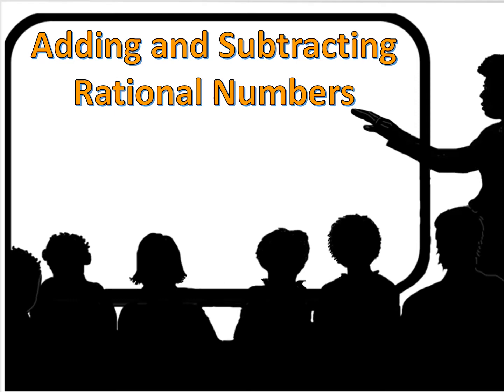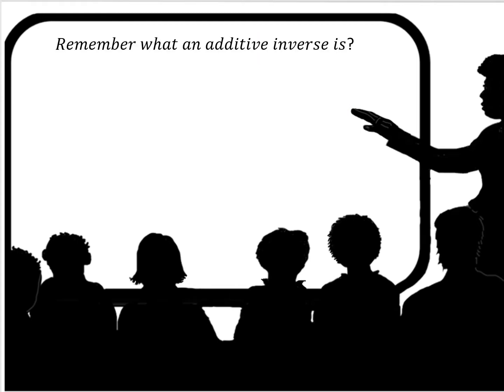This little video clip is on adding and subtracting rational numbers. Remember what an additive inverse is? Negative 5 and 5 are additive inverses of each other. 3 and negative 3. What happens when you add them together?